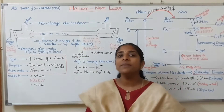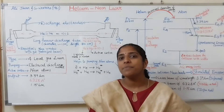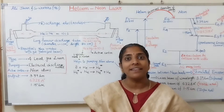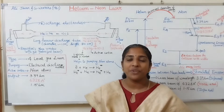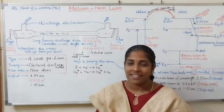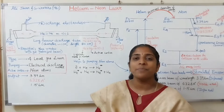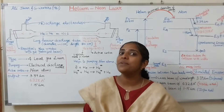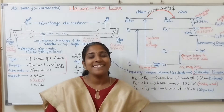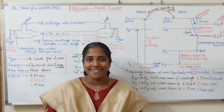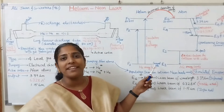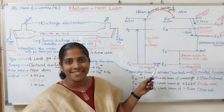Brewster's glass window is an arrangement to get the polarized laser beam. The entire arrangement is placed between two mirrors, in which one is 100% reflecting and the other is partially reflecting. The active medium placed between two mirrors acts as an optical resonator, providing positive feedback to the system.